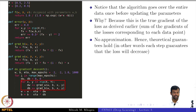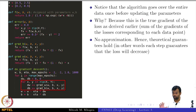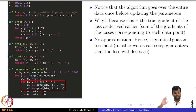All theoretical guarantees hold because this is the true gradient. If we move in the direction opposite to the gradient, everything falls in place as proved using Taylor series.